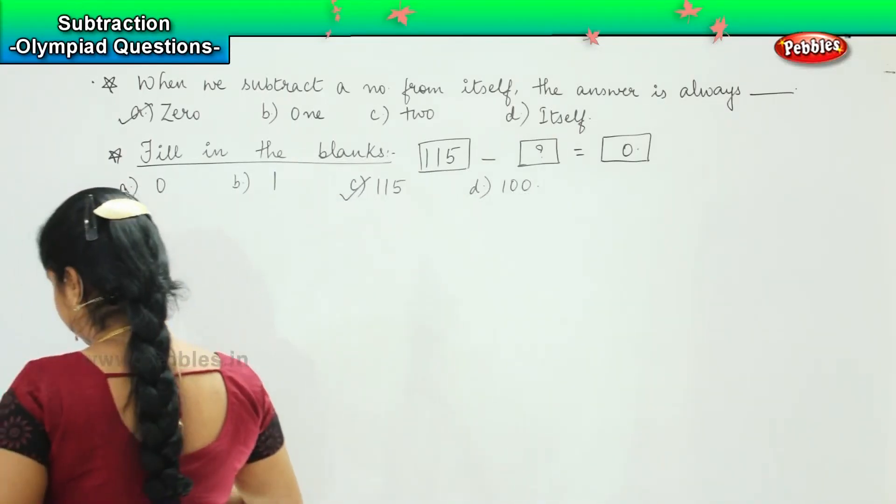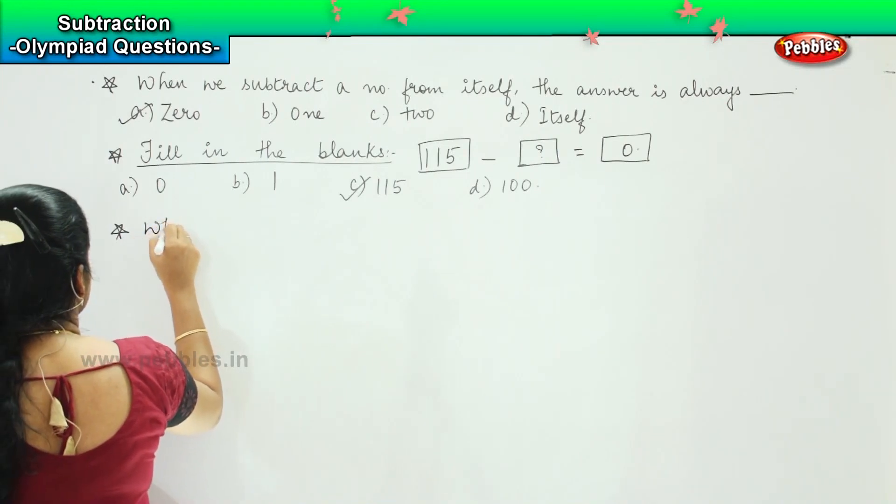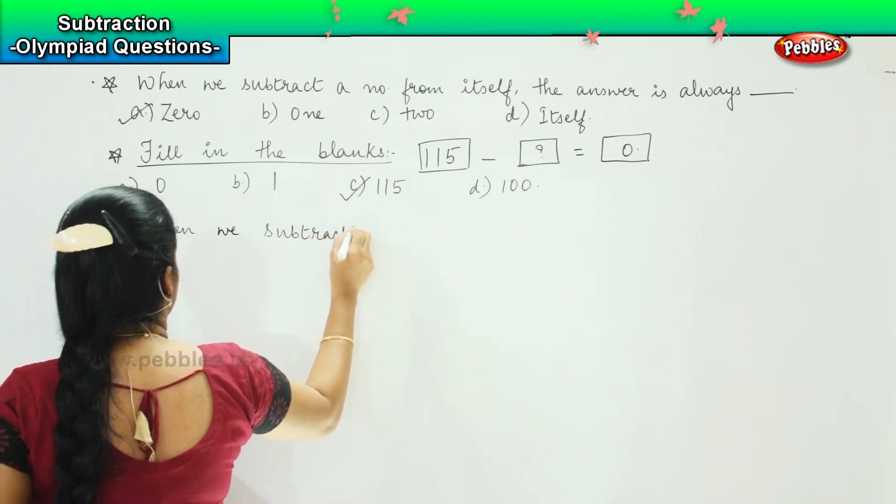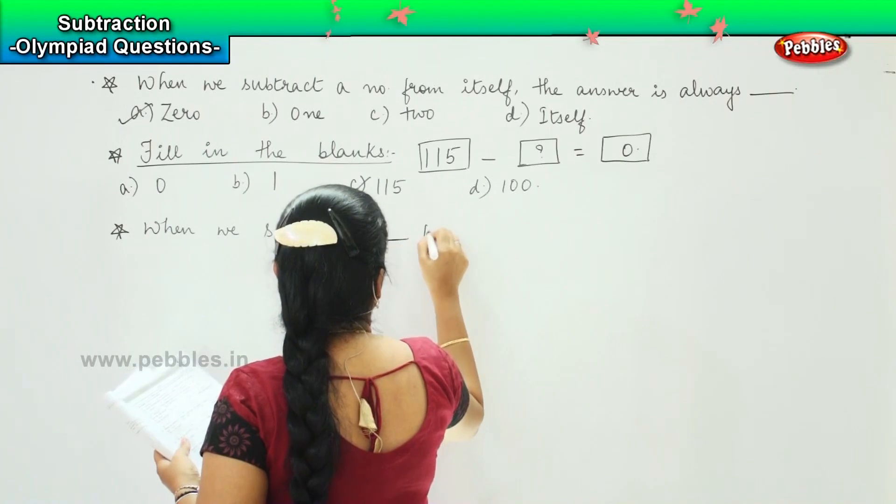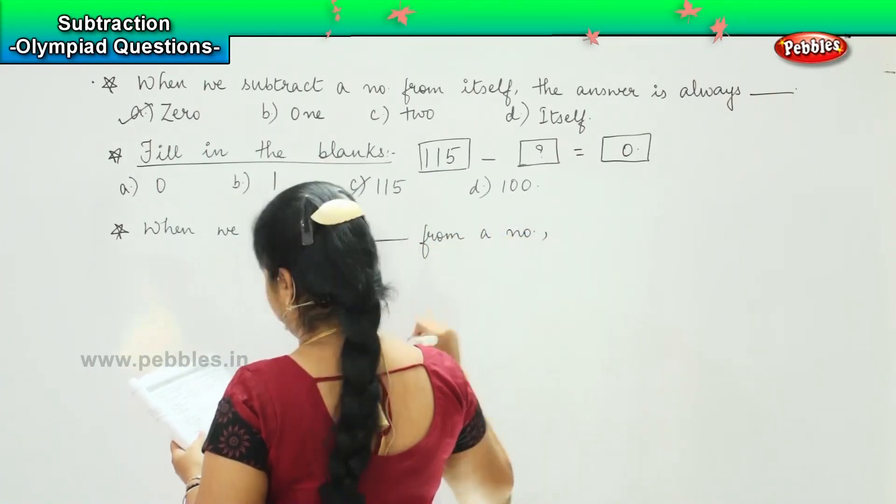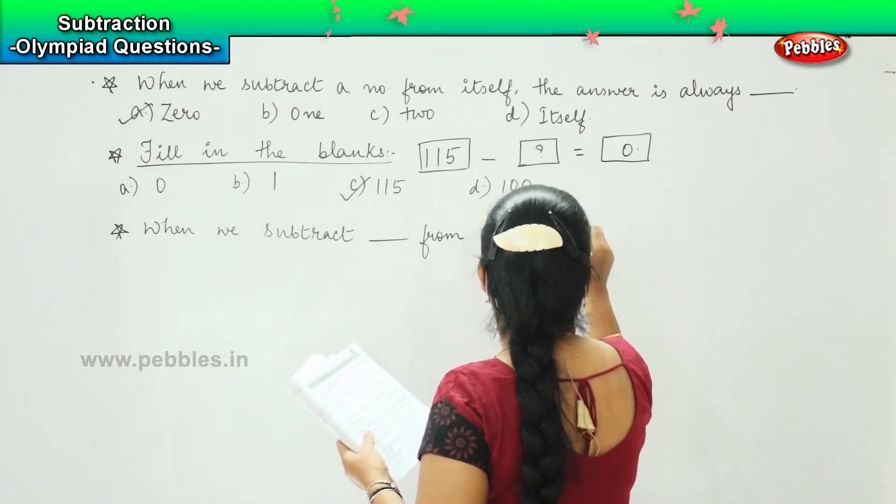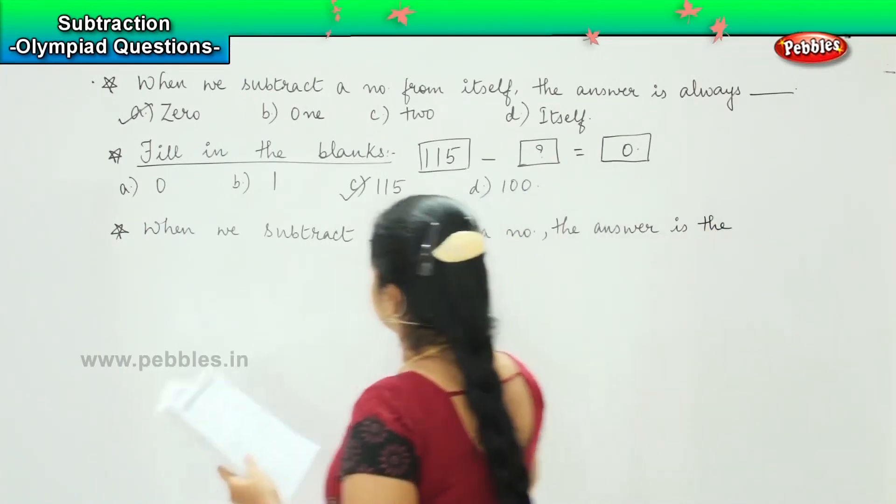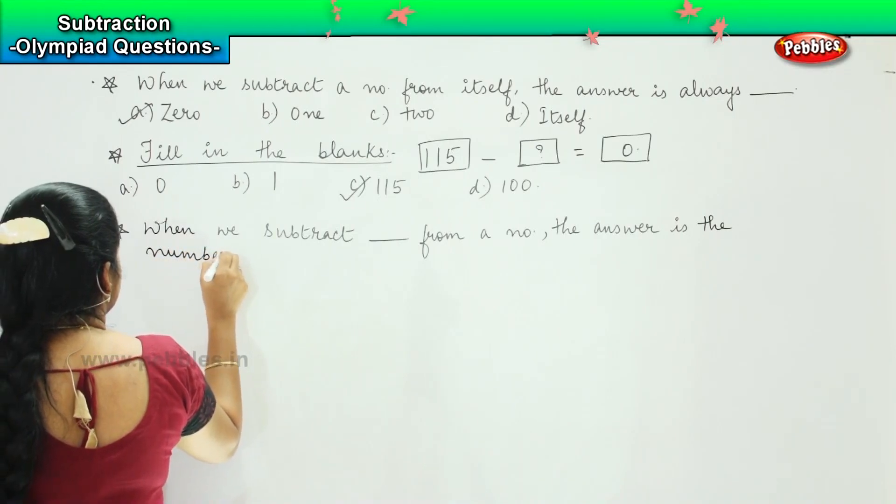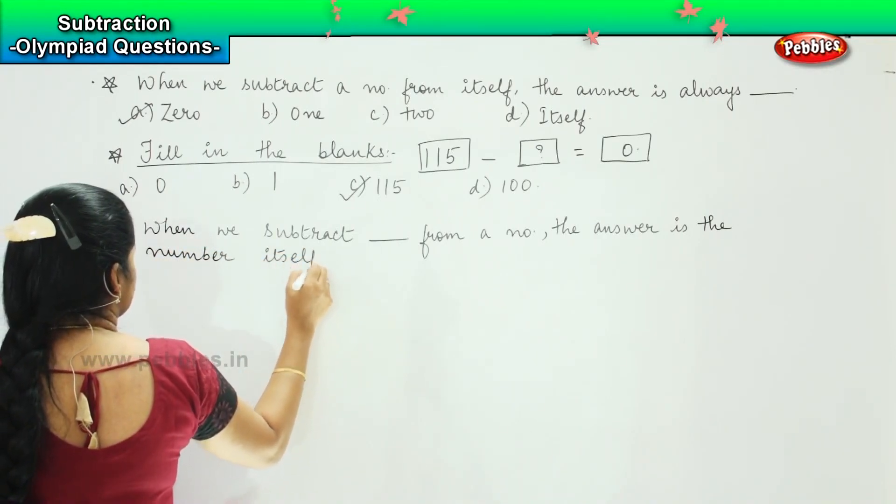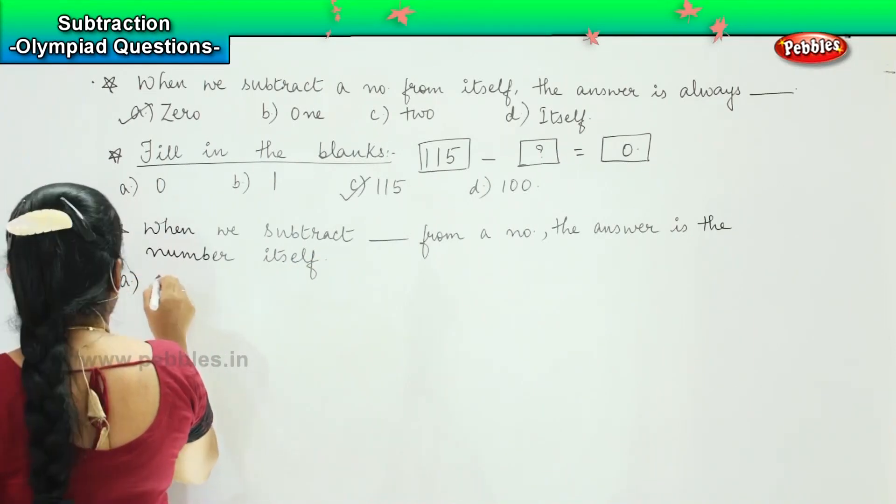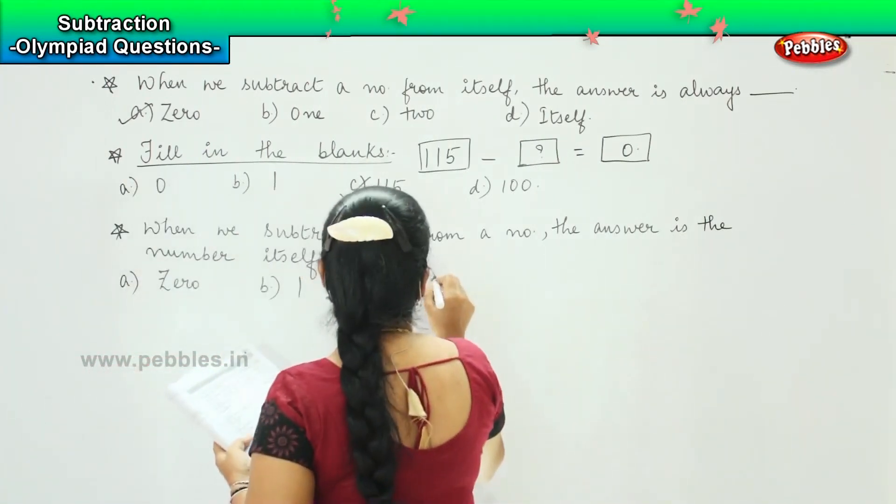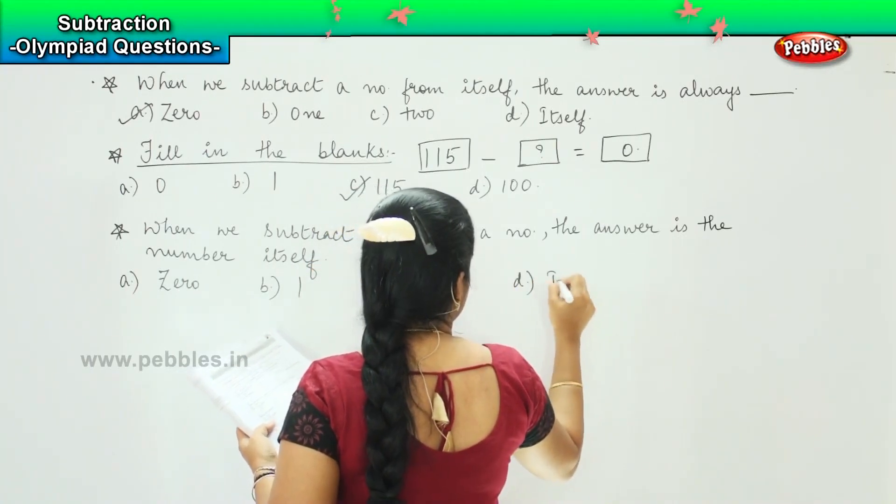Ok, so here is your next question. When we subtract dash from a number, the answer is the number itself. And your options are: a) zero, b) one, c) two, and d) the number itself.